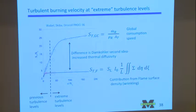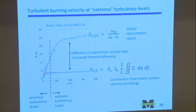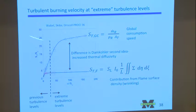This is a paper that two of my students submitted to the symposium — similar to work done in Toronto and other places. We measured the global consumption speed in a very highly turbulent flame and find it goes up to really large numbers — turbulent flames going more than 25 times faster than laminar flames. This is in a Bunsen-type flame.